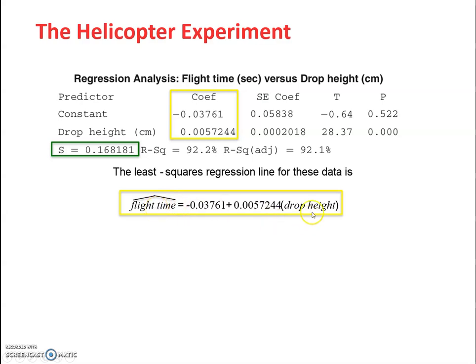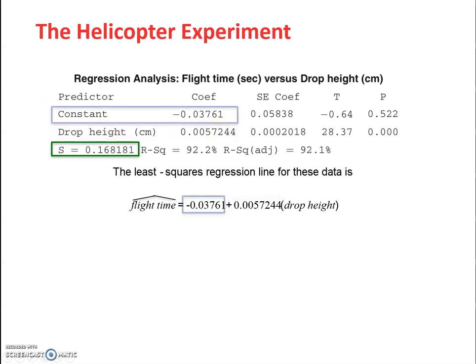These two values that are in yellow help you find your slope and your y-intercept. Notice how I didn't use x and y. I used hat of flight time and drop height. It's easier to use the actual variable name so you don't get confused about what is what. From there, you can see the drop height is next to its slope and the value above that is where the y-intercept came from.